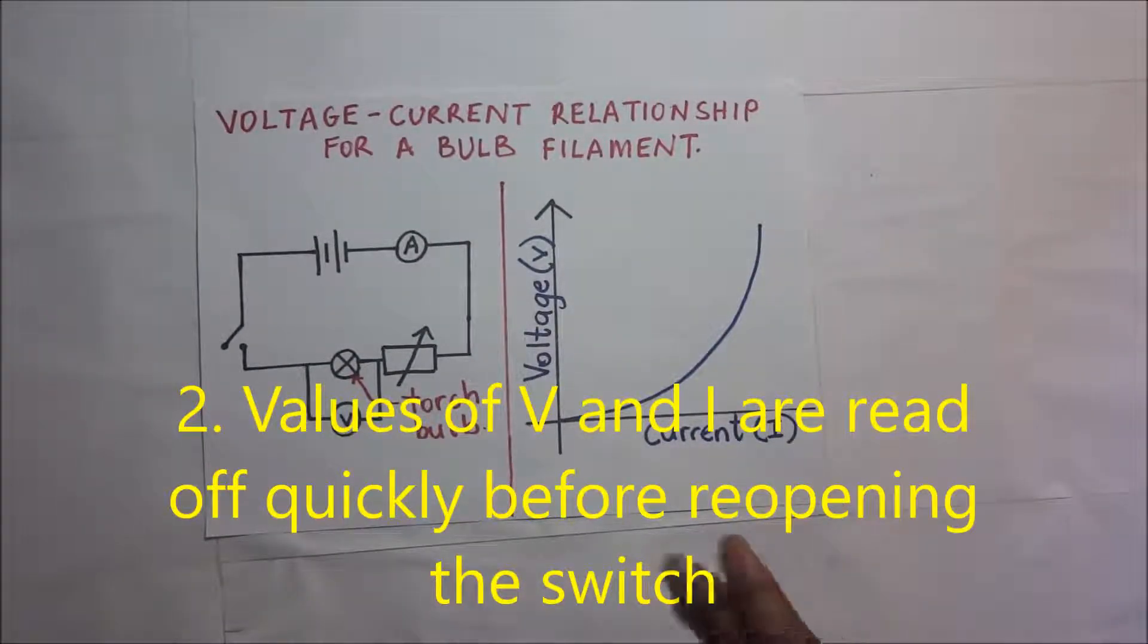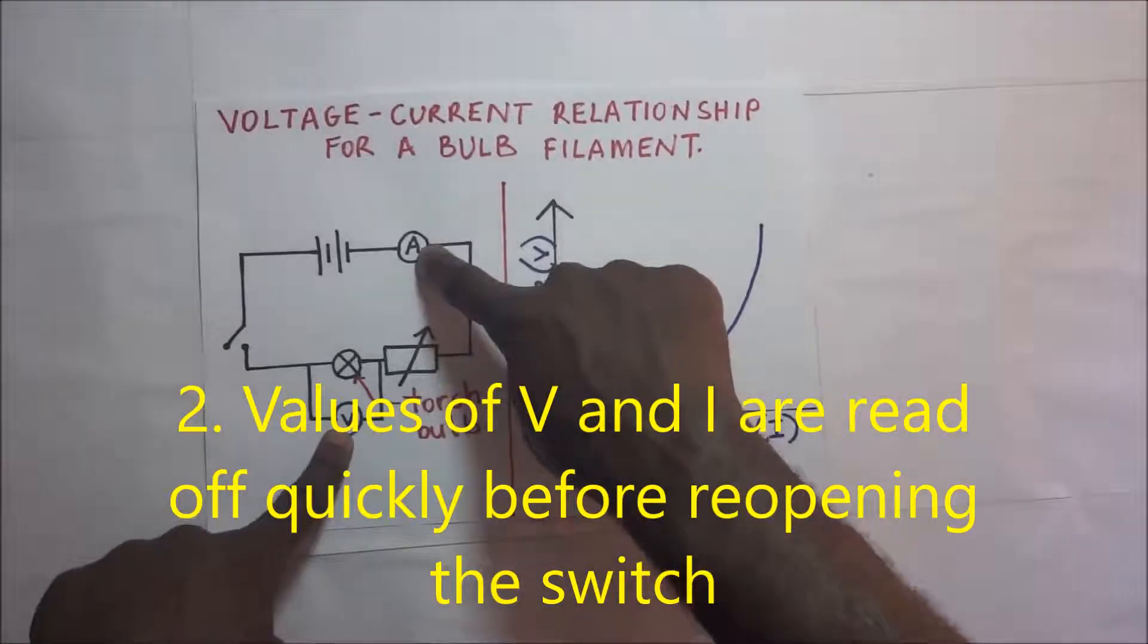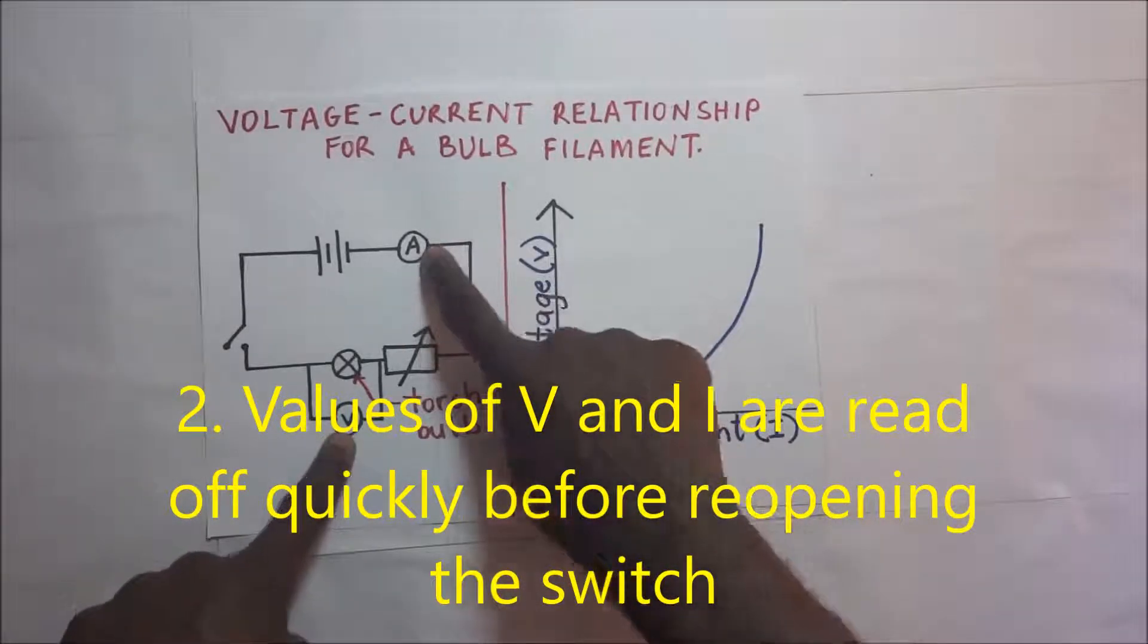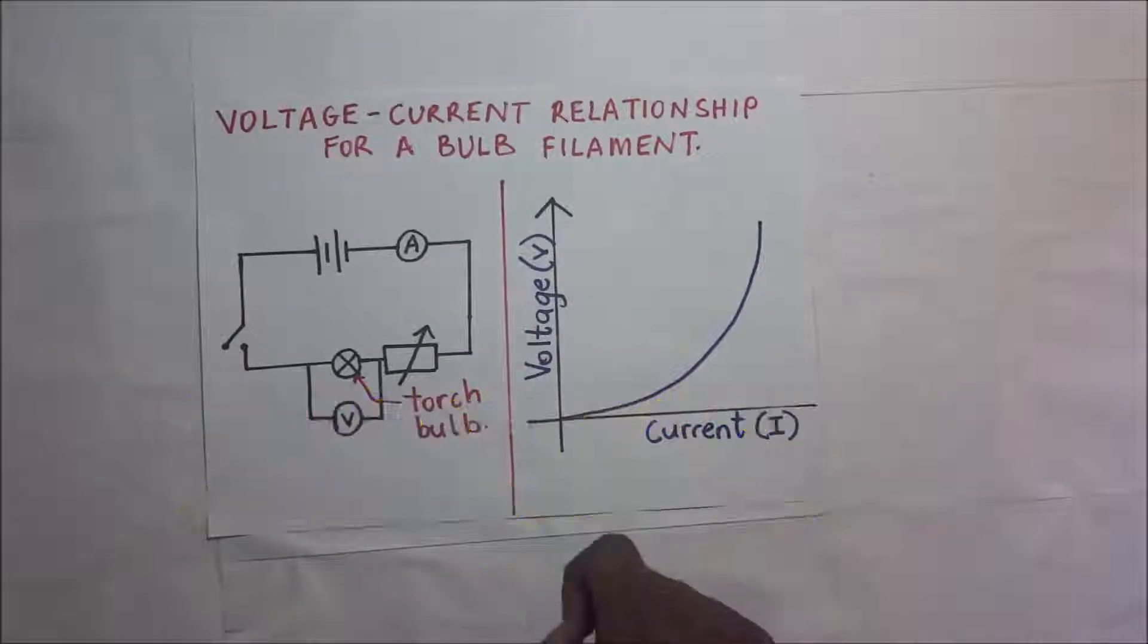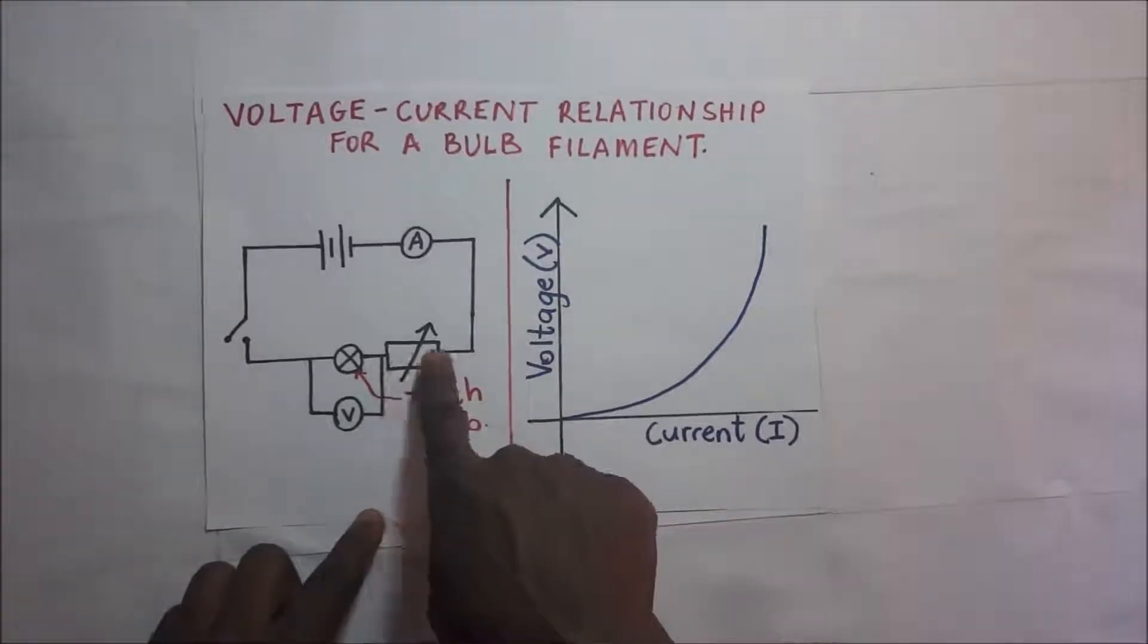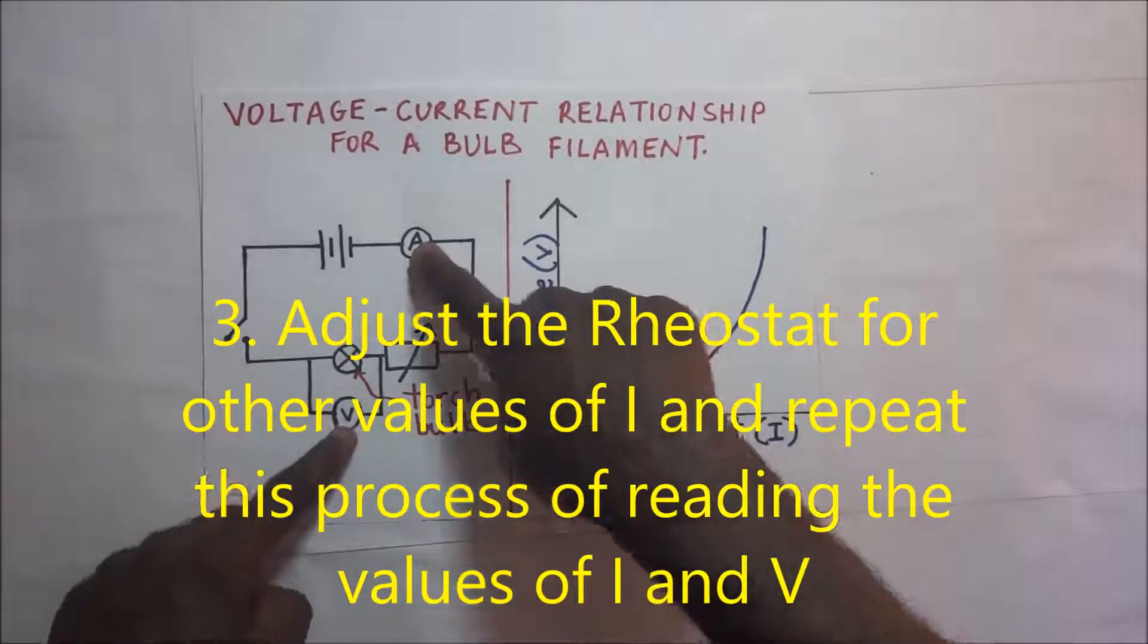We will measure and record the values of current and voltage when the resistance is very high. We will then adjust this rheostat so that we get other values of current and voltage.